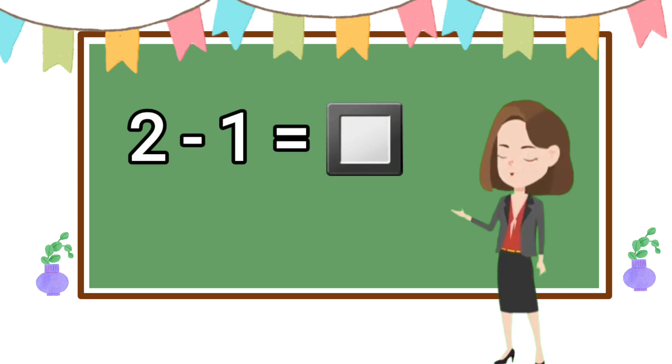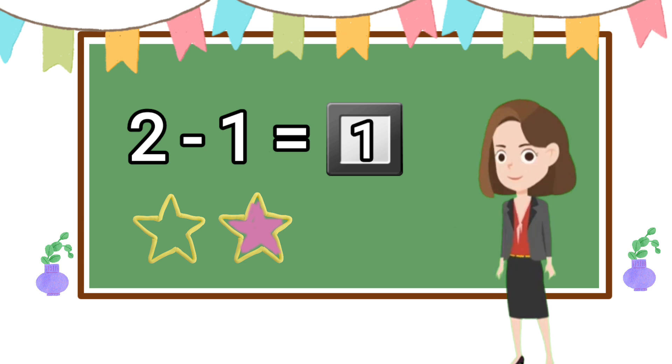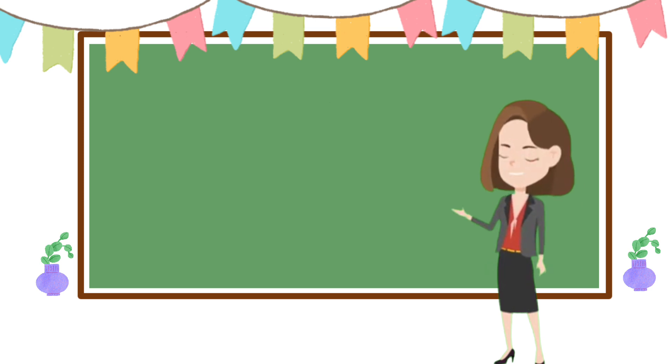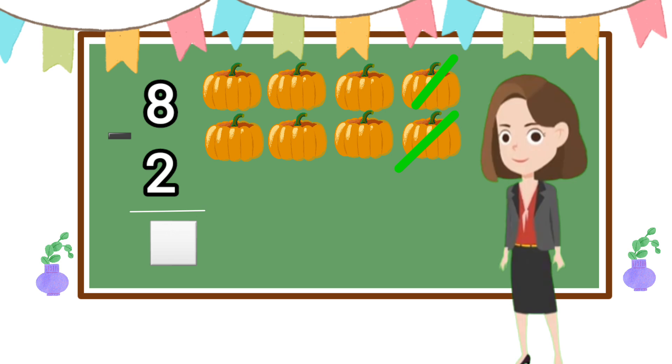Children, how will you read this? How many pictures have we drawn? Let's count: one, two, three, four, five, six, seven, eight. If we minus two of them, how many will remain? One, two, three, four, five, six. Very good.